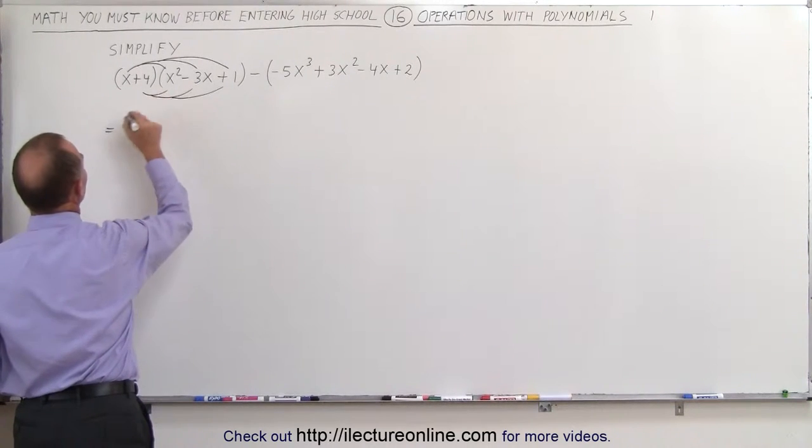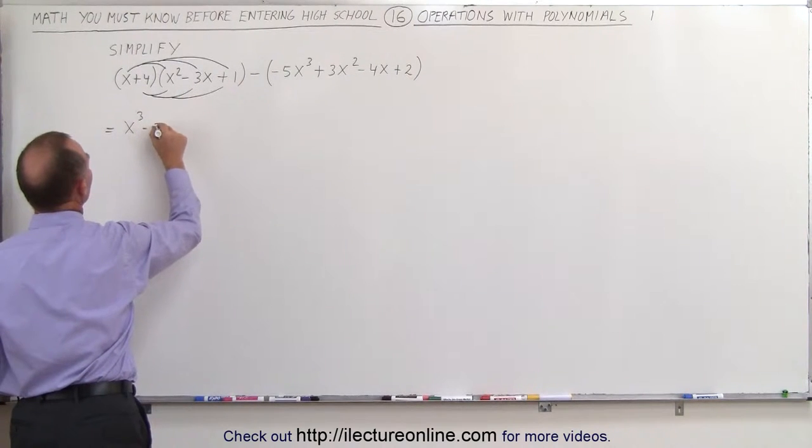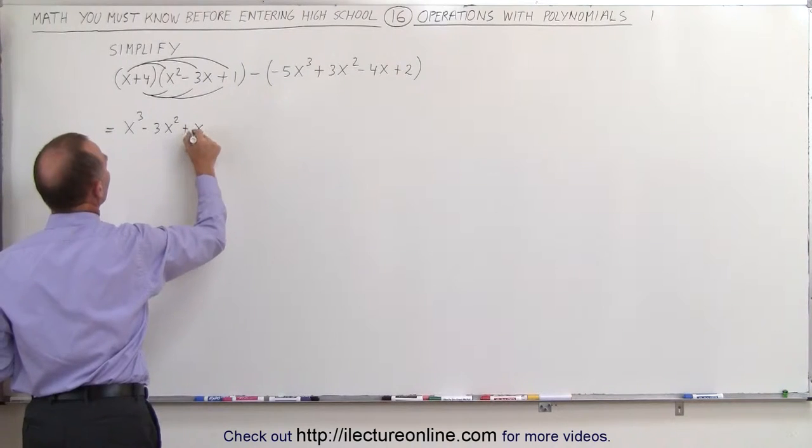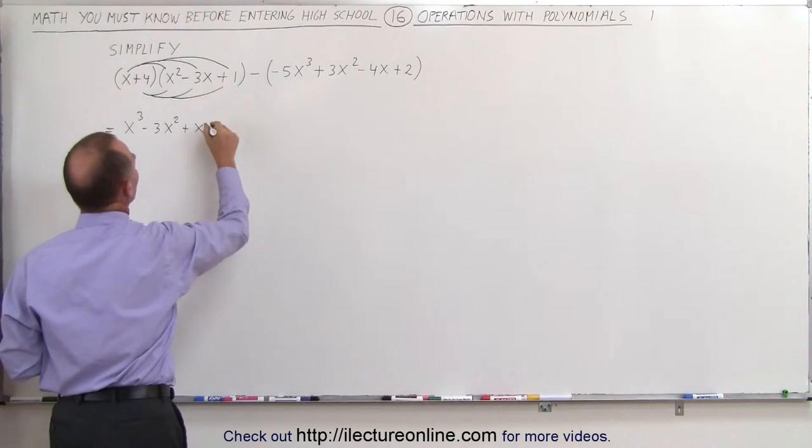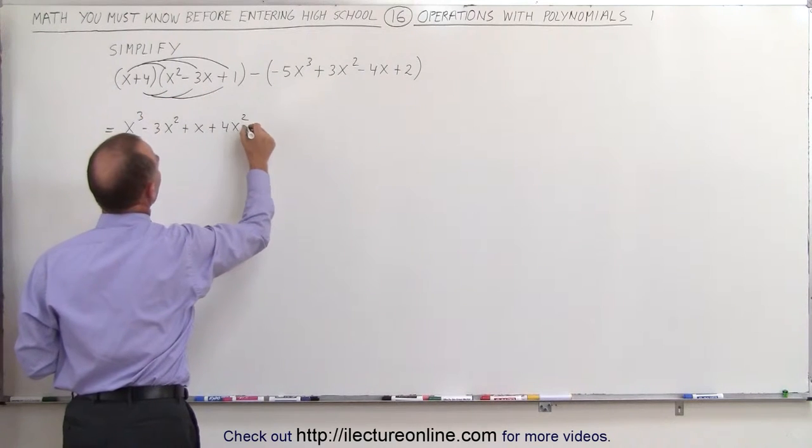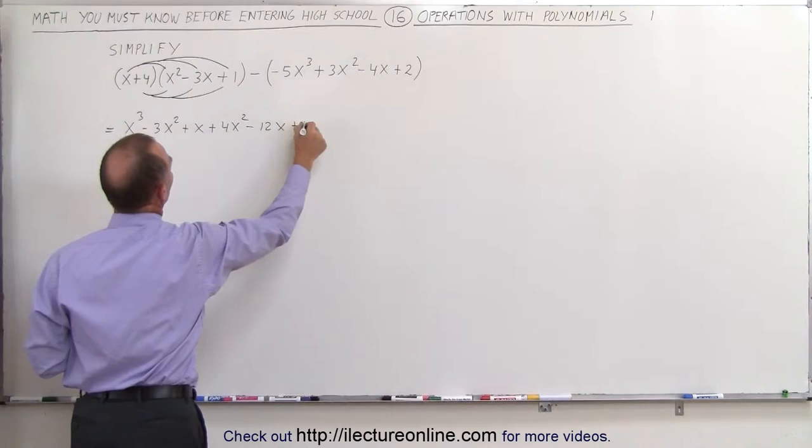So this is equal to x times x squared, which is x cubed, x times minus 3x, which is minus 3x squared, and x times 1 is plus x. 4 times this gives us plus 4x squared. 4 times this is minus 12x, and 4 times 1 is plus 4.